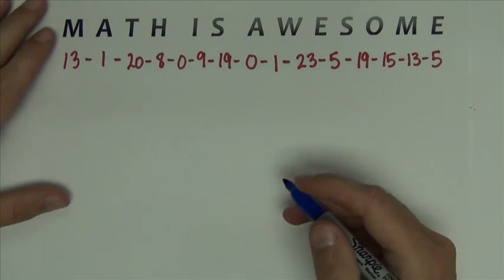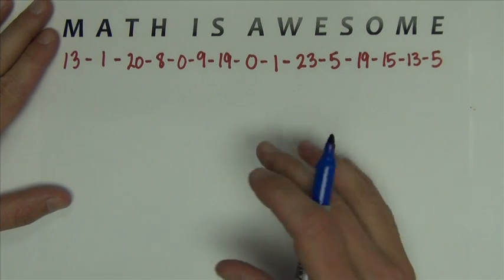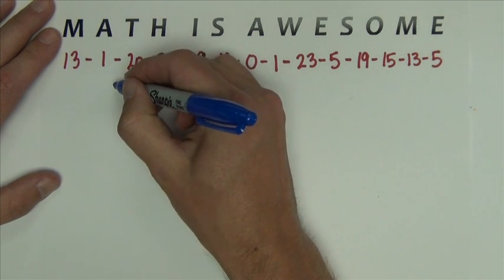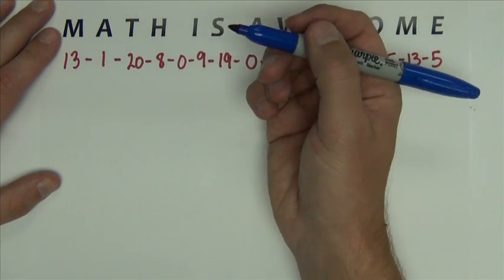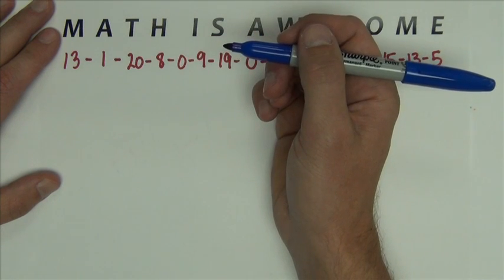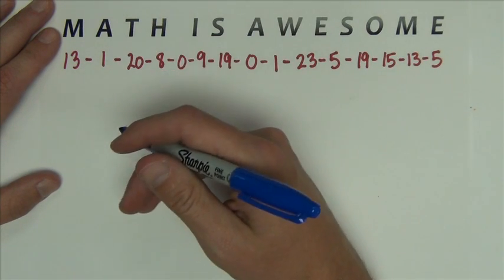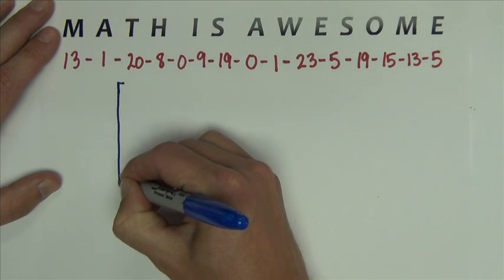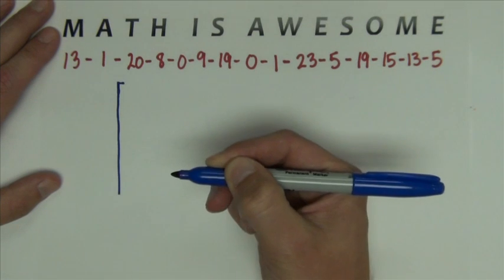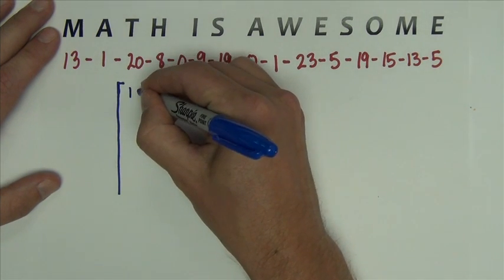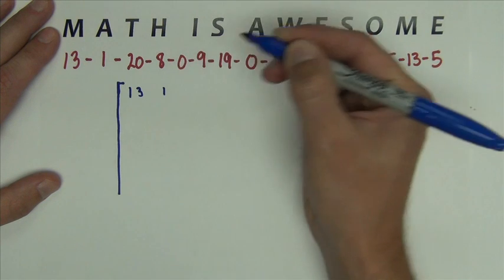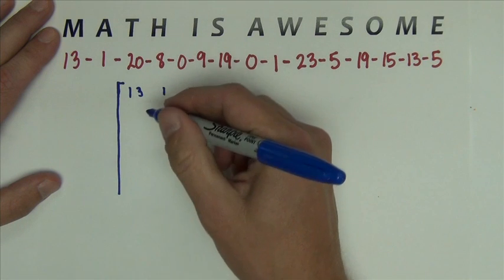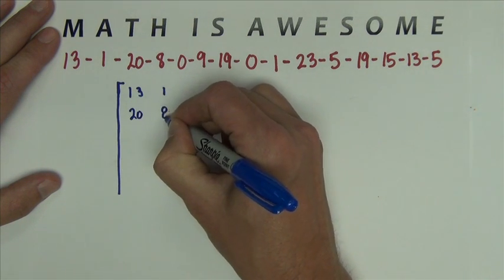The first thing I'm going to do is I'm going to place these numbers in a matrix. The matrix is going to have two columns and however many rows I need to fill it up. So it's going to begin like this and I'm just going to leave it open ended at the bottom. But the first row will be 13, 1, so just two numbers across, two columns, and then next is going to be 20 and 8.